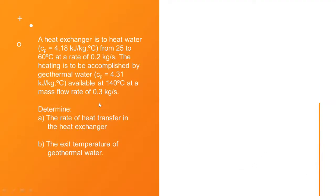Let's move on to our tutorial question. A heat exchanger is to heat water, CP is 4.18 kJ per kilogram degree Celsius, from 25 to 60 degrees Celsius at a rate of 0.2 kilogram per second. The heating is to be accomplished by geothermal water, CP equal to 4.31 kJ per kilogram degree Celsius, available at 140 degrees Celsius at a mass flow rate of 0.3 kilogram per second. The question asks us to determine the rate of heat transfer in the heat exchanger.